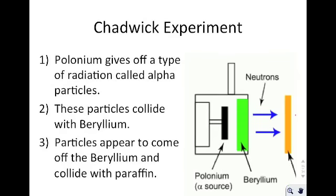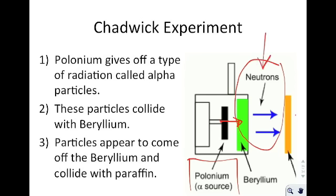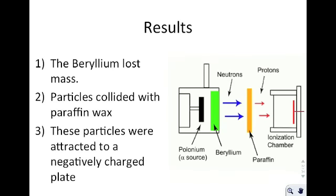Then we come to the Chadwick experiment — often neglected, it was a very difficult experiment to do. They had an alpha particle source — the same alpha particles from the Rutherford experiment — that collided with a beryllium molecule. This beryllium molecule ejected what we now know are neutrons. They didn't know these were neutrons at the time, but they knew that putting polonium on beryllium caused the beryllium to lose mass — it was still beryllium but losing mass, so it wasn't a chemical reaction. The particles that came off collided with paraffin wax, and all of a sudden protons and electrons were present. These massive but chargeless particles, when they collided with paraffin, produced protons and electrons.